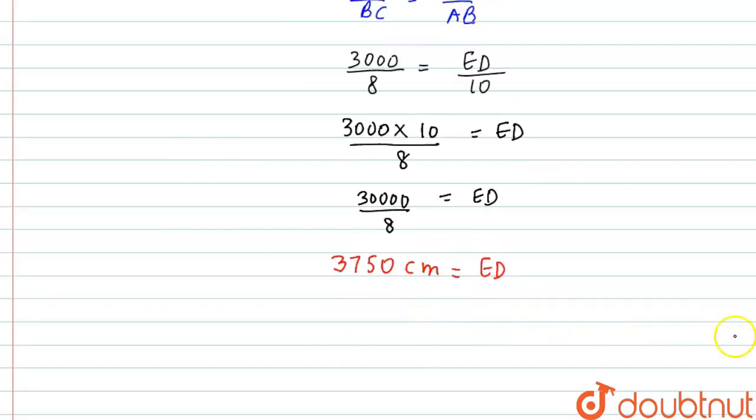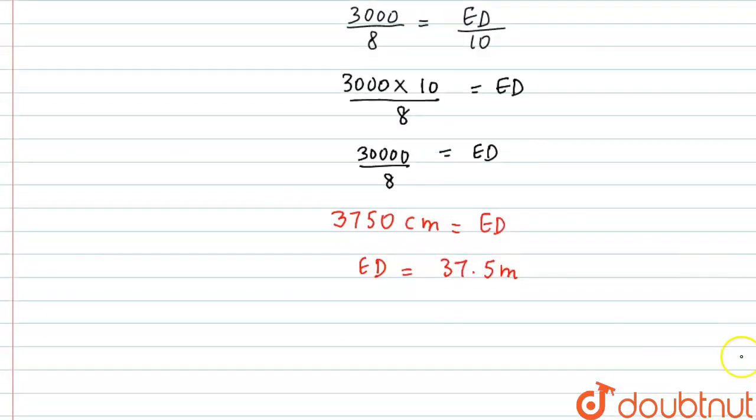We can convert this into meters by dividing by 100. We will get this as ED equal to 37.5 meters. Thus we can conclude, therefore, height of tower is 37.5 meters.